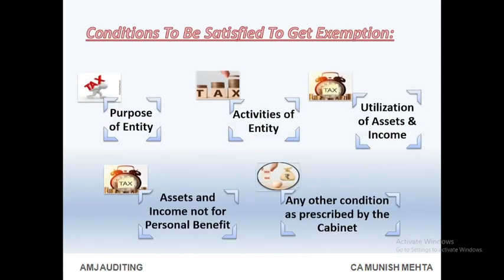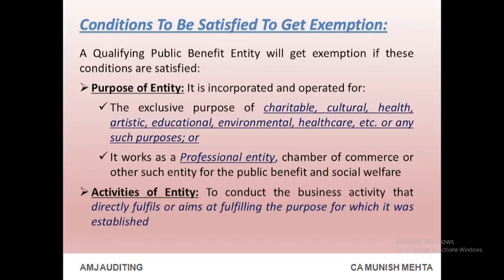Conditions to be satisfied to get exemption: a qualifying public benefit entity will get exemption if these conditions are satisfied. Purpose of entity: it is incorporated and operated for the exclusive purpose of charitable, cultural, health, artistic, educational, environmental, health care, etc., or any such purposes; or it works as a professional entity, chamber of commerce, or other such entity for the public benefit and social welfare. Activities of entity: to conduct business activity that directly fulfills or aims at fulfilling the purpose for which it was established.